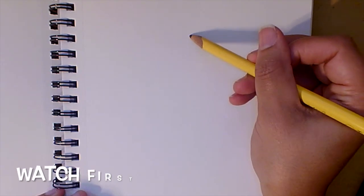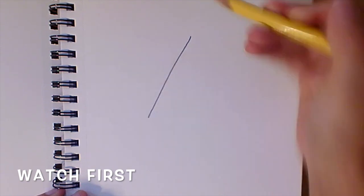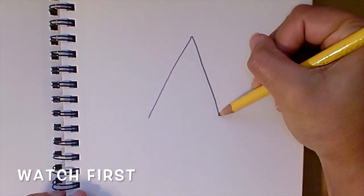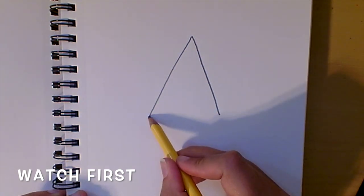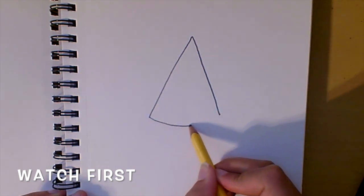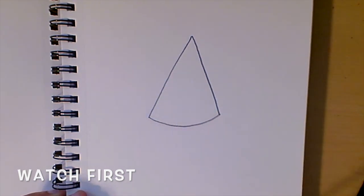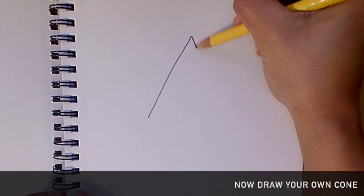Cone. Start your cone by making an angle line. Then, connect the two ends with a curved line. Now, draw your own cone.